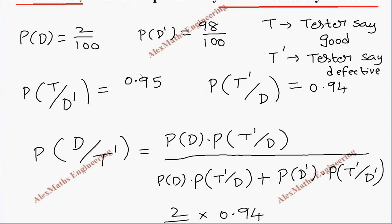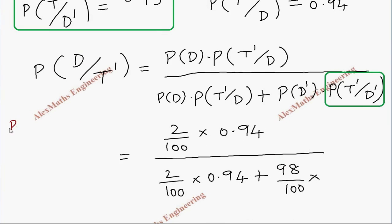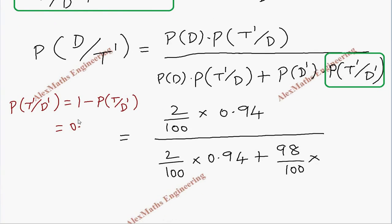We already know from the question P of T by D dash, but what we need is T dash by D dash. So we have to take 1 minus. Let's write it here separately: P of T dash by D dash is 1 minus P of T by D dash, so 1 minus 0.95. After subtraction, 1 minus 0.95, that will be 0.05.